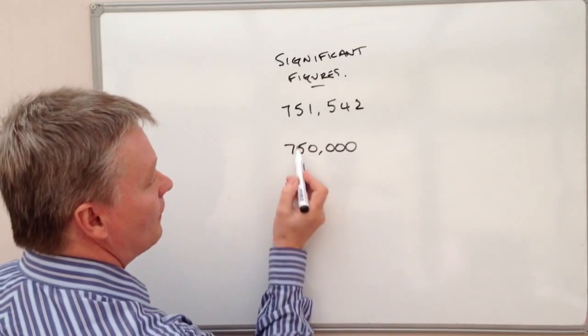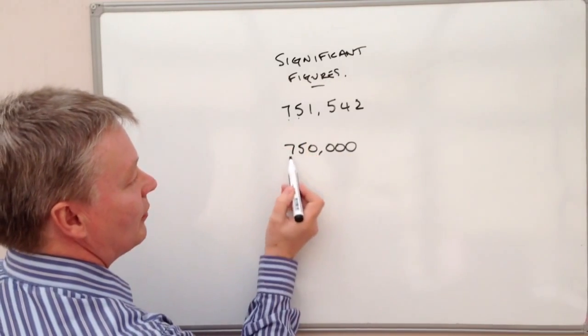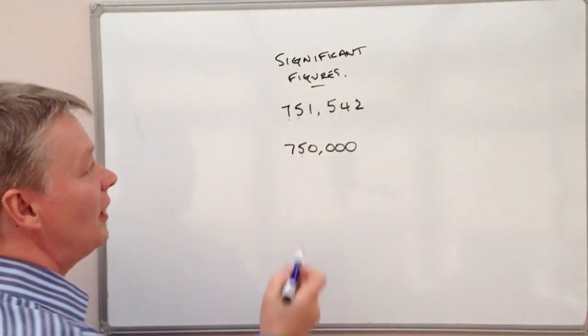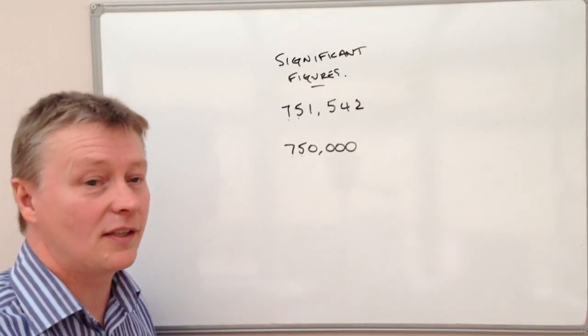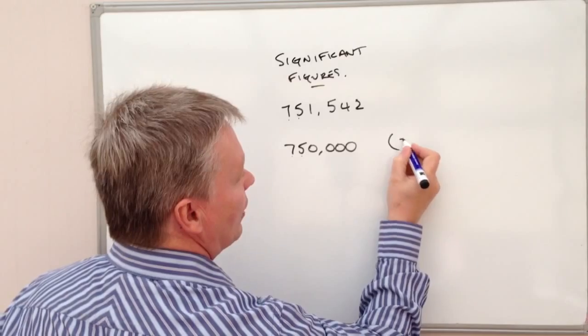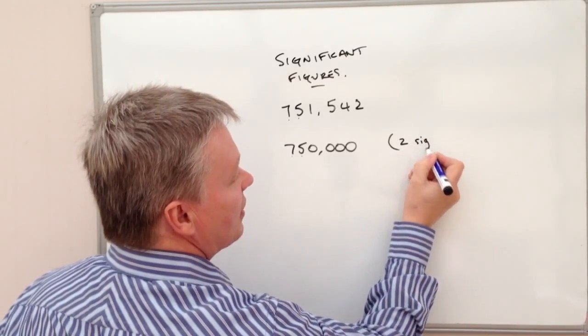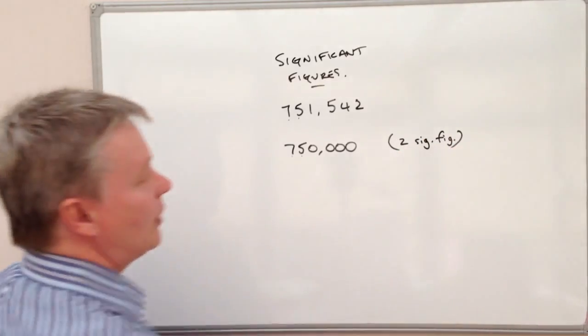Well, 750,000 is that number to two significant figures. So the way significant figures works is that if I look at this number, the first two numbers are 75, which I keep. And then the rest of the numbers become, in this particular case, zero. So this number is to two significant figures.